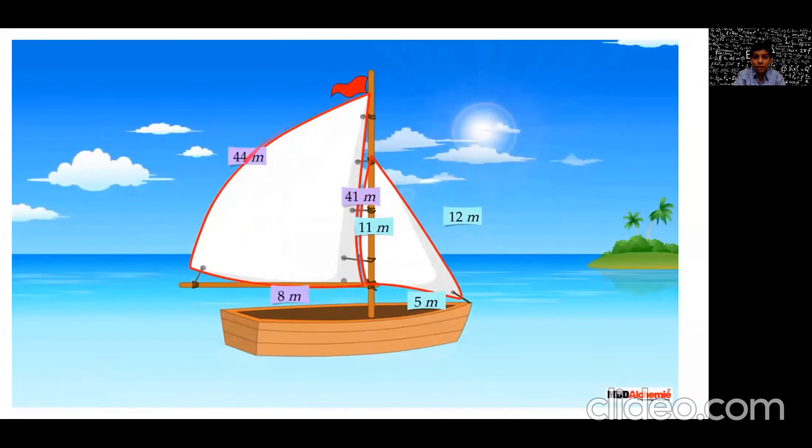So this side was 44 meters, this was 41 meters and this was 8 meters. This was 11, this was 5 and this was 12. So Ram took out his copy and began calculating.